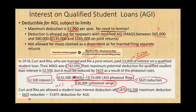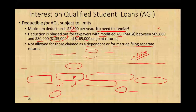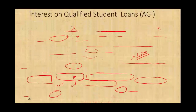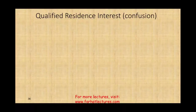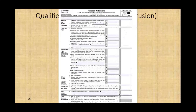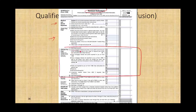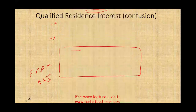So this deduction of $1,875 goes right here for AGI on Form 1040. Now let's talk about qualified residence interests, or interest on home mortgage to be more specific. There's some confusion about this topic, but hopefully we'll clarify it. We are back to Schedule A, which is itemized deductions. We already covered medical expenses and taxes. Now we're going to be looking at interest you paid — specifically home mortgage interest. These deductions are from AGI, not for AGI.